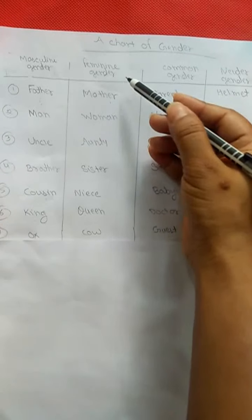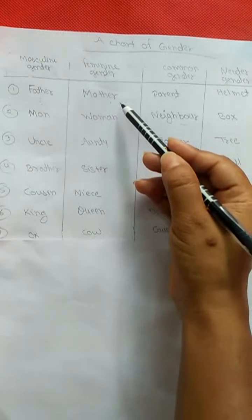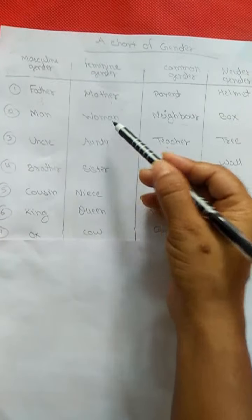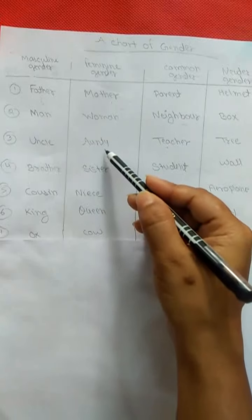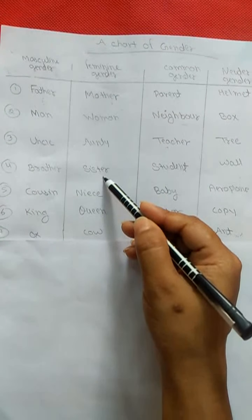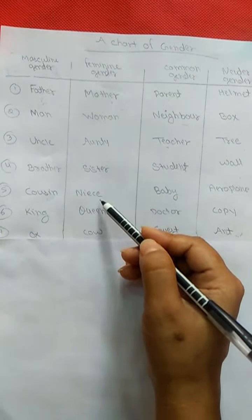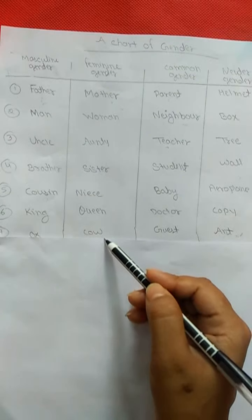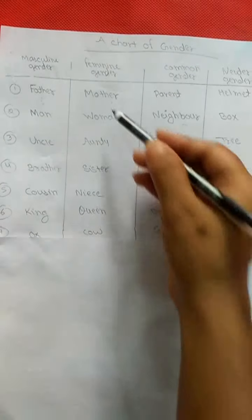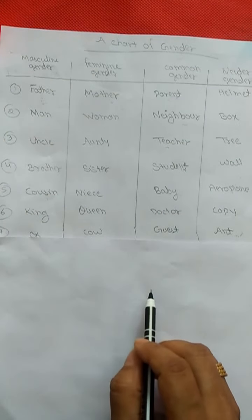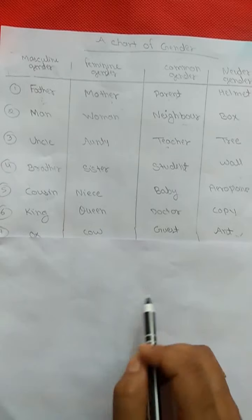Feminine gender includes: mother, woman, auntie, sister, niece, queen, cow. These are called feminine gender. Now, what comes in common gender? Parent, neighbor, teacher, student, baby, doctor, guest.